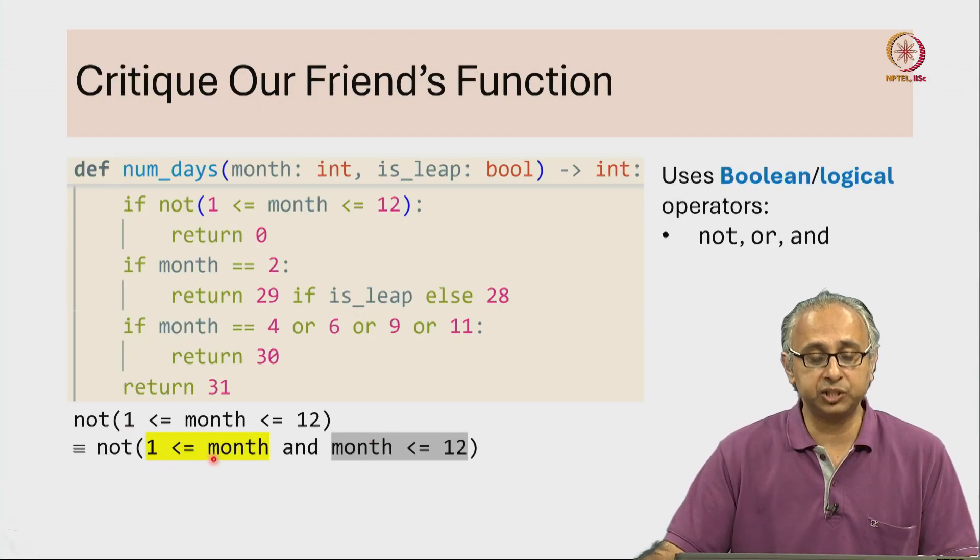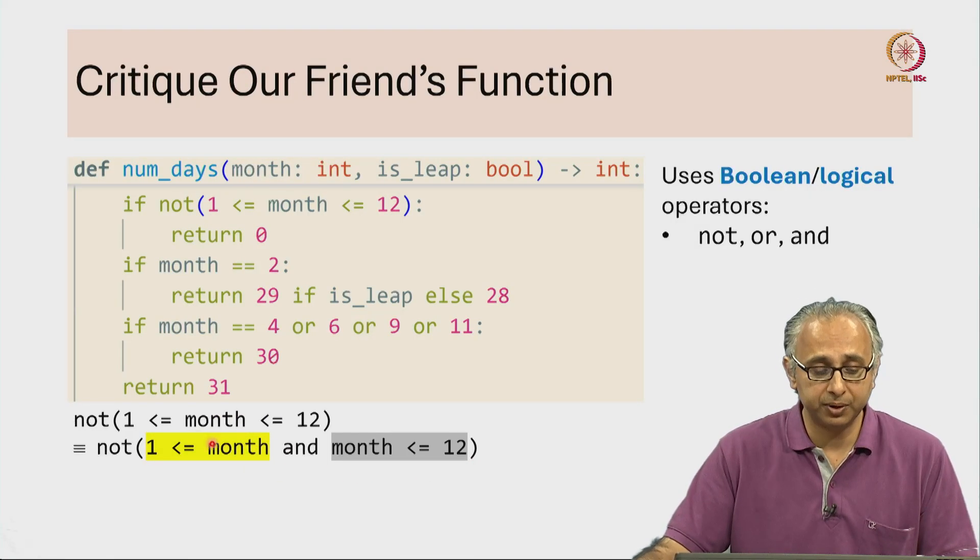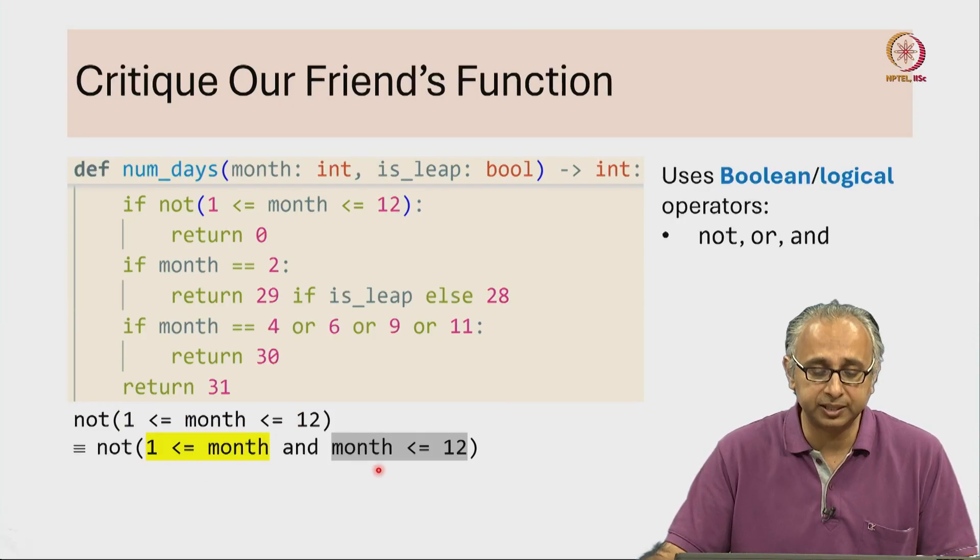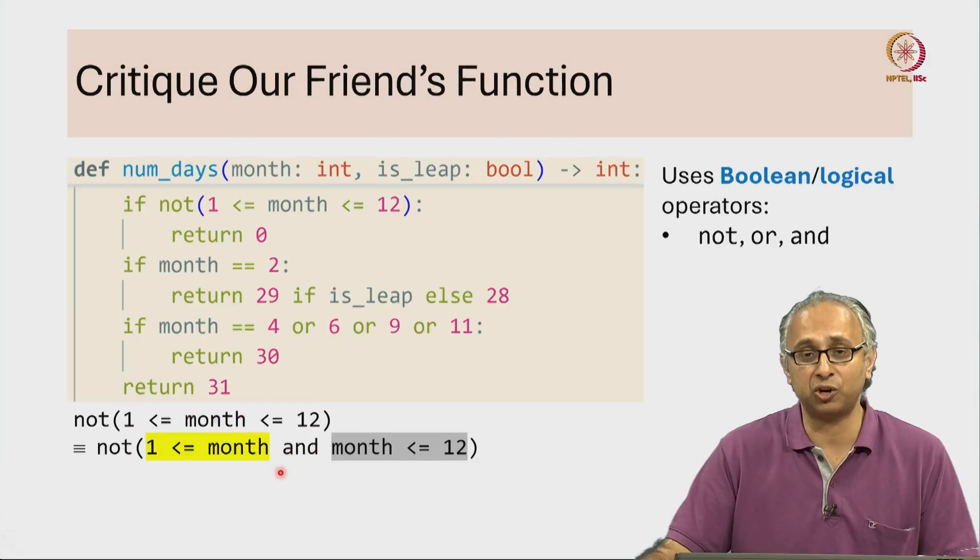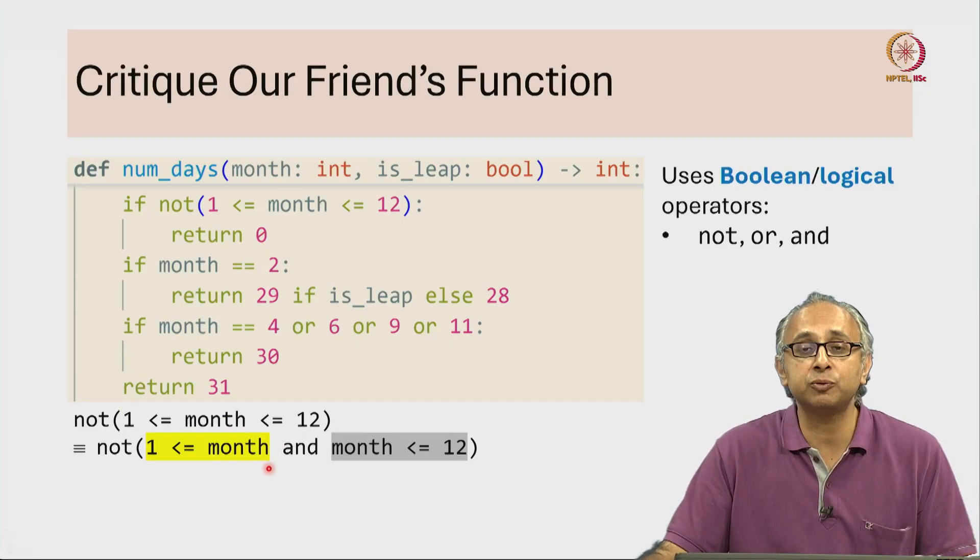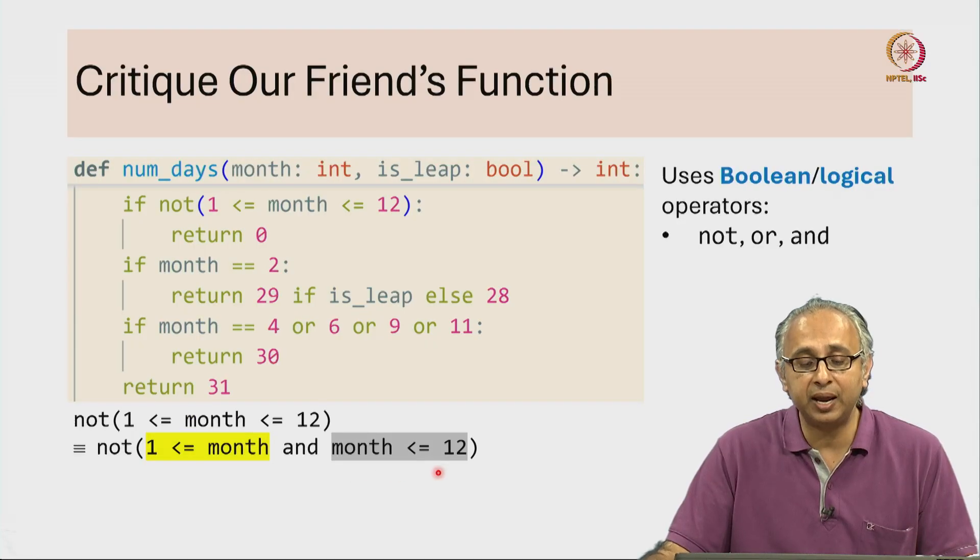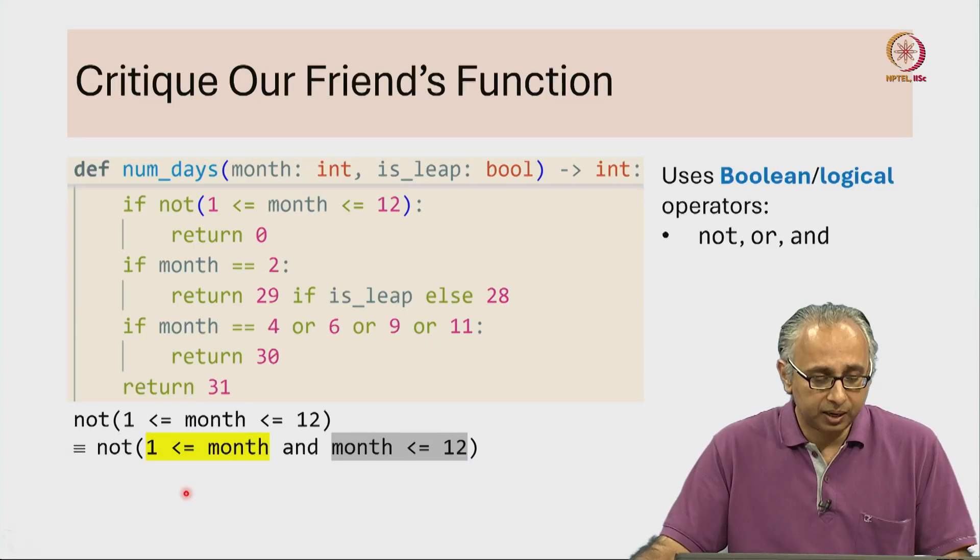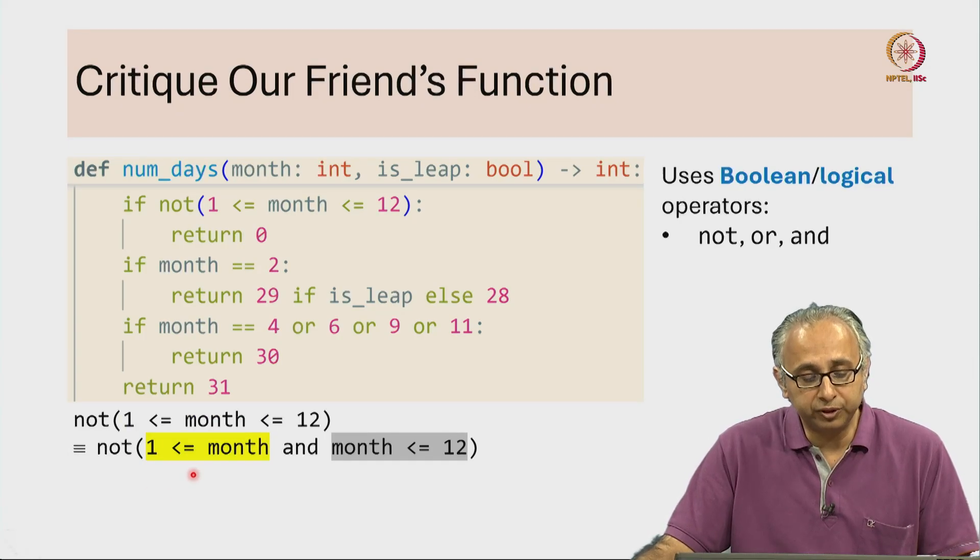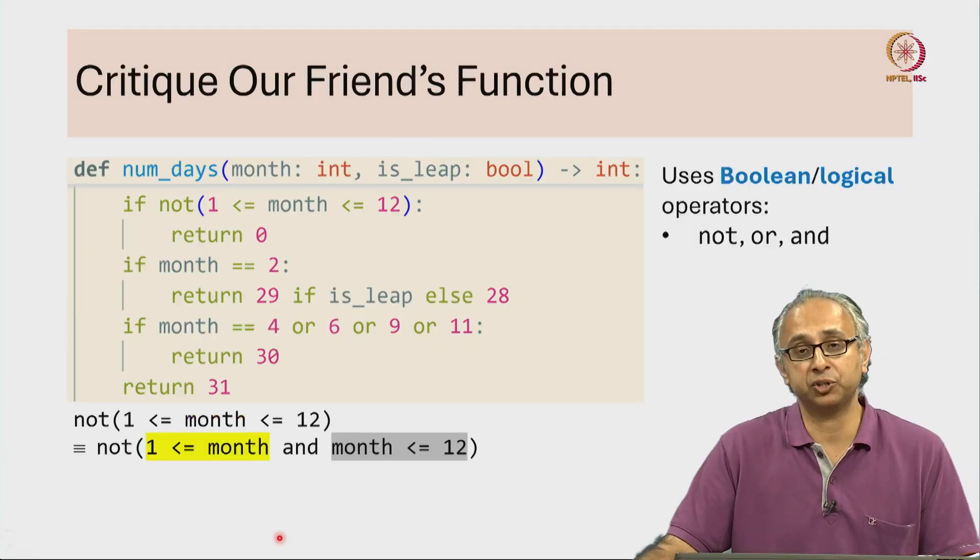There is 1 less than or equal to month and month less than or equal to 12. Remember this expression is just shorthand for actually saying these two conditions with the and operator. So both this yellow highlighted condition needs to be true and this grey highlighted condition needs to be true. Now how can you simplify an expression that is not of the and of two conditions?